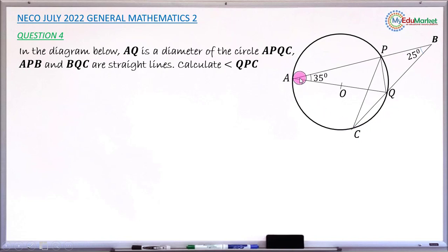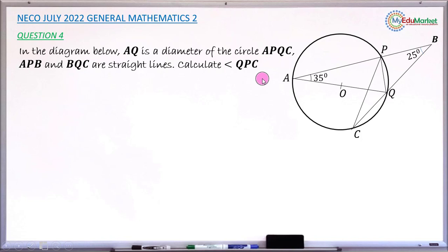You can see this line AQ — it says it's a diameter. You can see it passes through the center of the circle. A, P, B and BQC are straight lines.